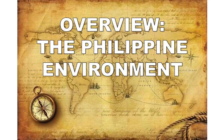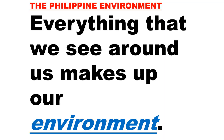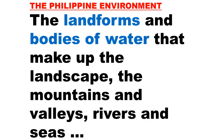Before we discuss Quarter 4, Module 1, let us first have an overview about the Philippine environment. Everything that we see around us makes up our environment. What makes up the Philippine environment? The landforms and bodies of water that make up the landscape — the mountains and valleys, rivers and seas — all of these are part of our environment.